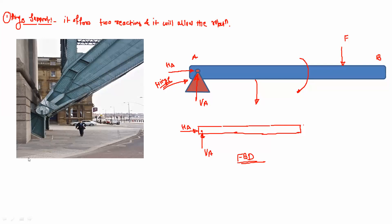The practical application can be seen in the bridge, which is supported using a hinge joint. At this point we have two reactions: a vertical reaction VA and a horizontal reaction HA. The second type of support is the roller support.